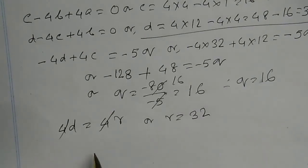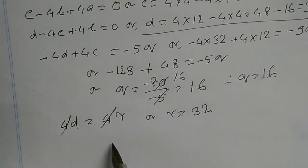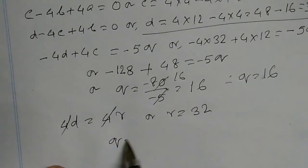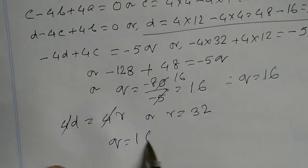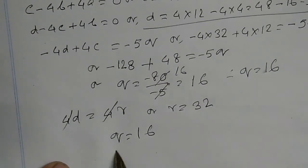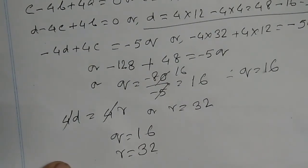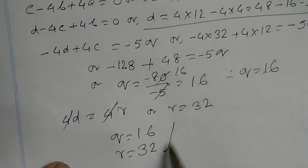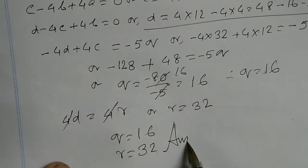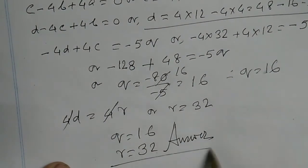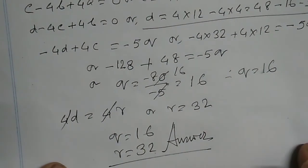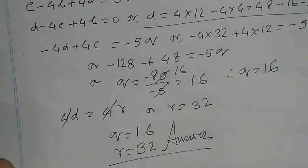Equating the constant term: 4d equals 4r, so r equals d equals 32. Hence, finally we get q equals 16 and r equals 32. This is a beautiful problem on factor theorem.